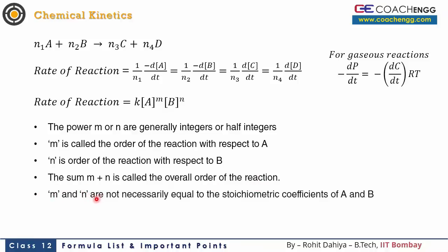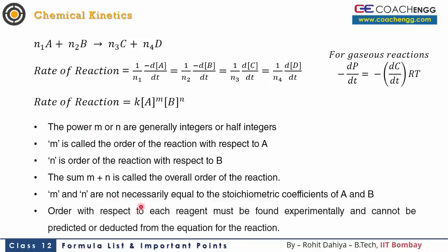m and n are obtained experimentally; they are not necessarily equal to the stoichiometric coefficients N1 and N2. The order of reaction can only be found experimentally — we cannot deduce it from the balanced equation alone. Many questions from this topic appear in JEE as well as CBSE board exams, where a table of data with concentrations of A, B, and the rate at different instants across two or three experiments is given to determine the order.